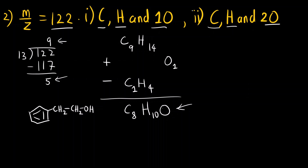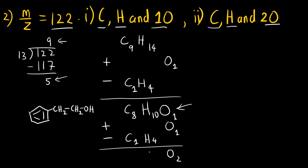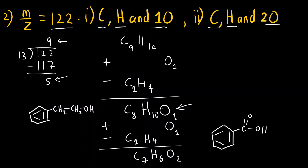Then we have to find out for the second one — two oxygens. We repeat the same process: add one more oxygen, subtract CH4. Oxygen count becomes 2, hydrogens become 10 − 4 = 6, carbons become 8 − 1 = 7. So the molecular formula is C7H6O2. This is the molecular formula for benzoic acid — you can verify that benzoic acid gives C7H6O2.